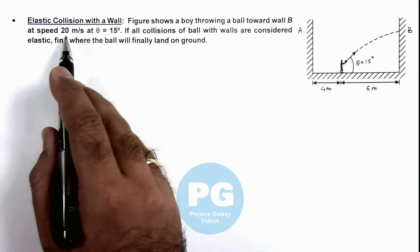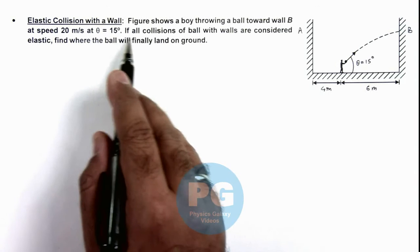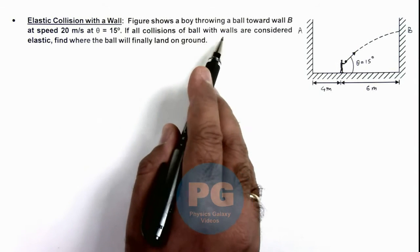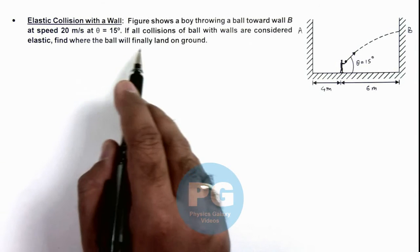At a speed of 20 meters per second at an angle of projection 15 degrees. Here it is saying if all collisions of ball with the walls are considered to be elastic, we are required to find where the ball will finally land on ground.